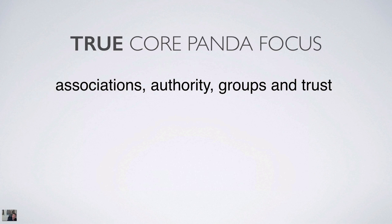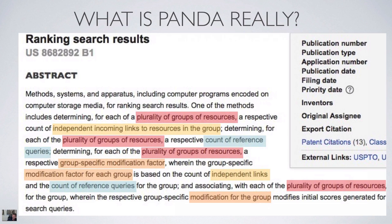Now there is a core focus of Panda according to its own patent filed with the U.S. Patent Office, and it focuses on associations, authority groups, and trust. If we take a look at the U.S. patent filing of 2012, published by Google in 2014, we see what we're looking at here: the 2012 patent filed with the U.S. Patent Office and subsequently published on Google's website in 2014.